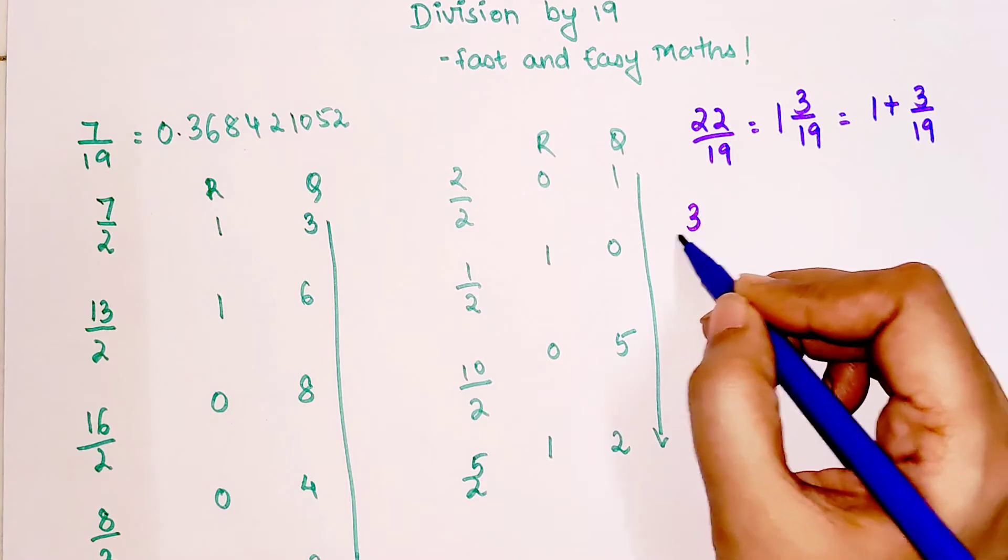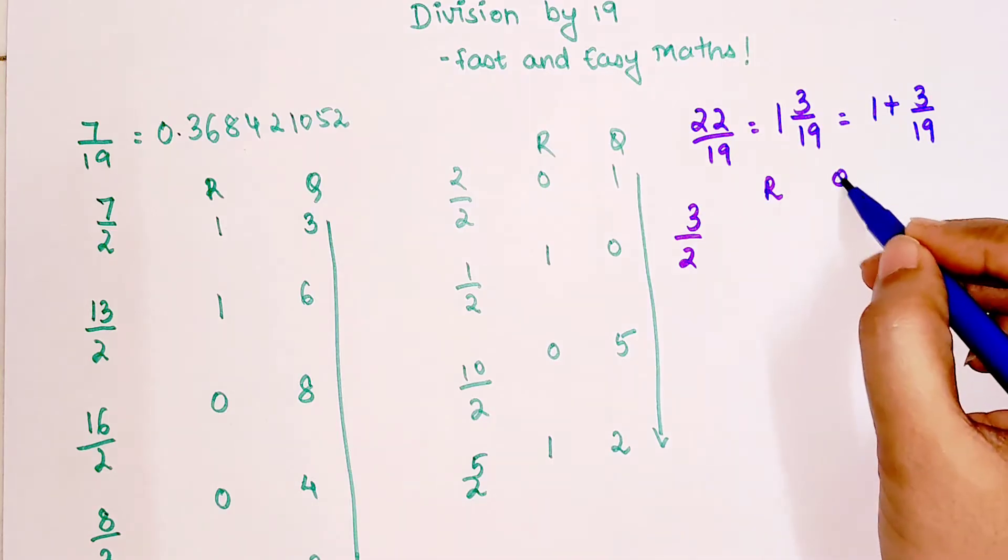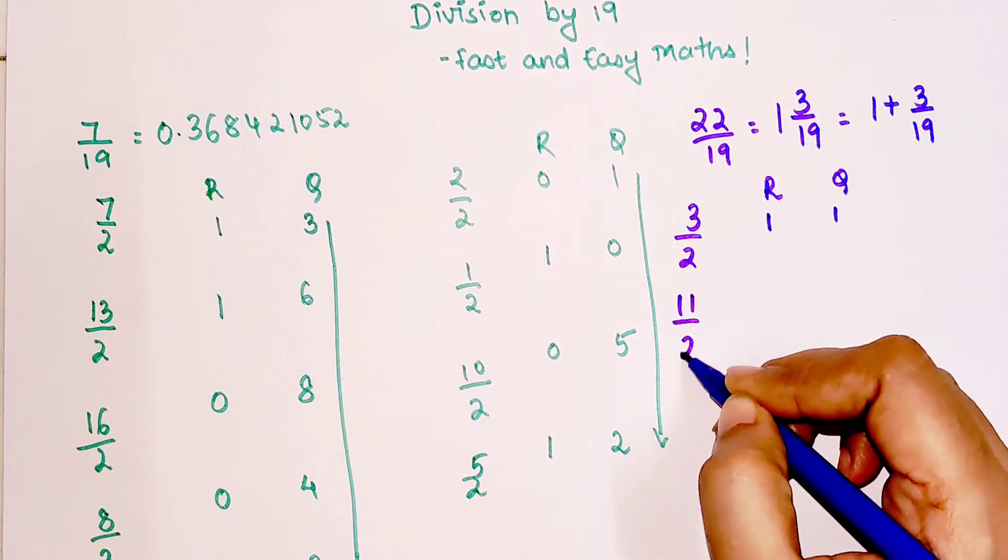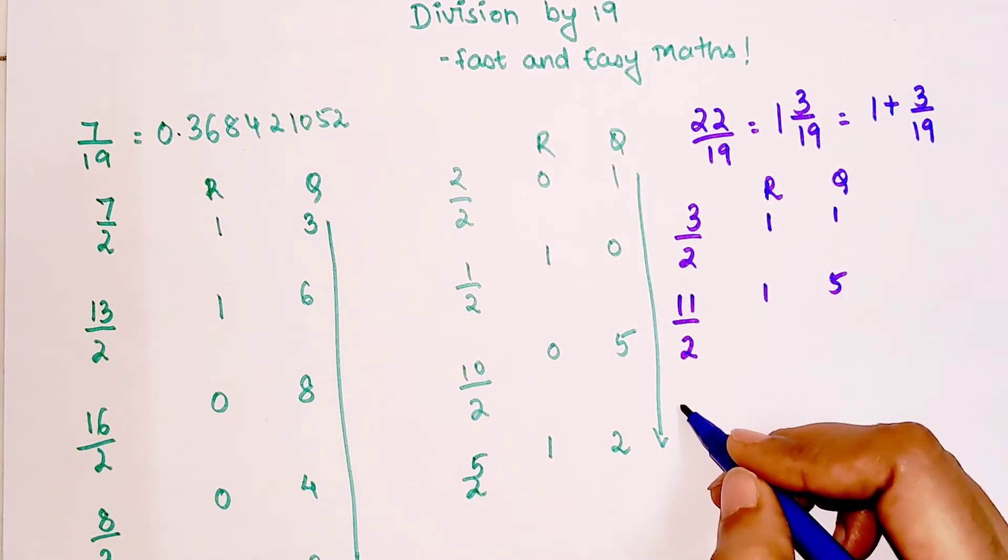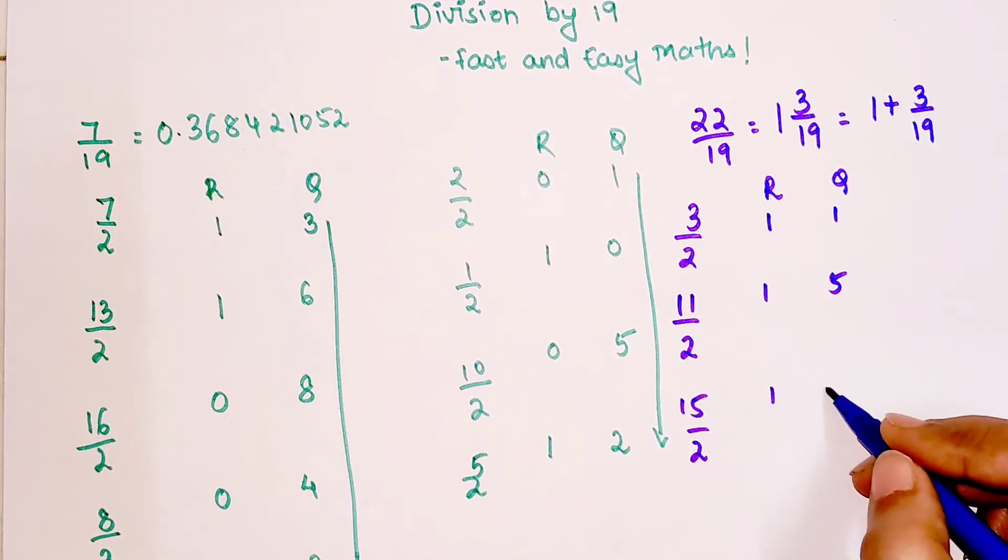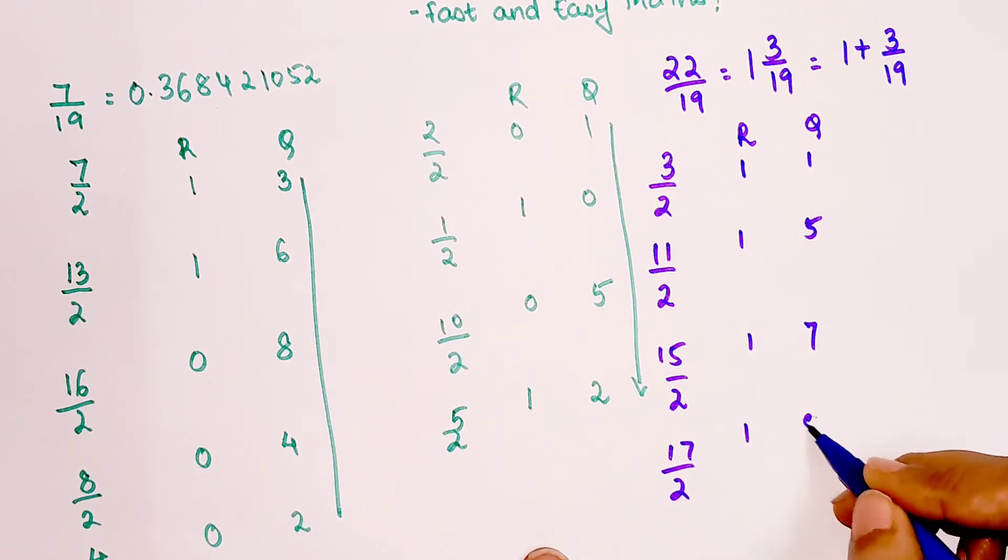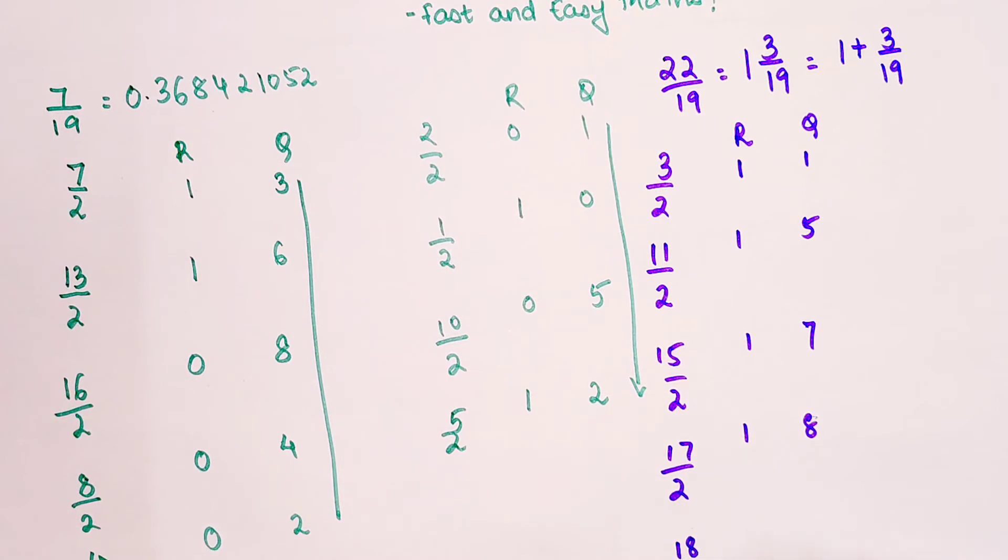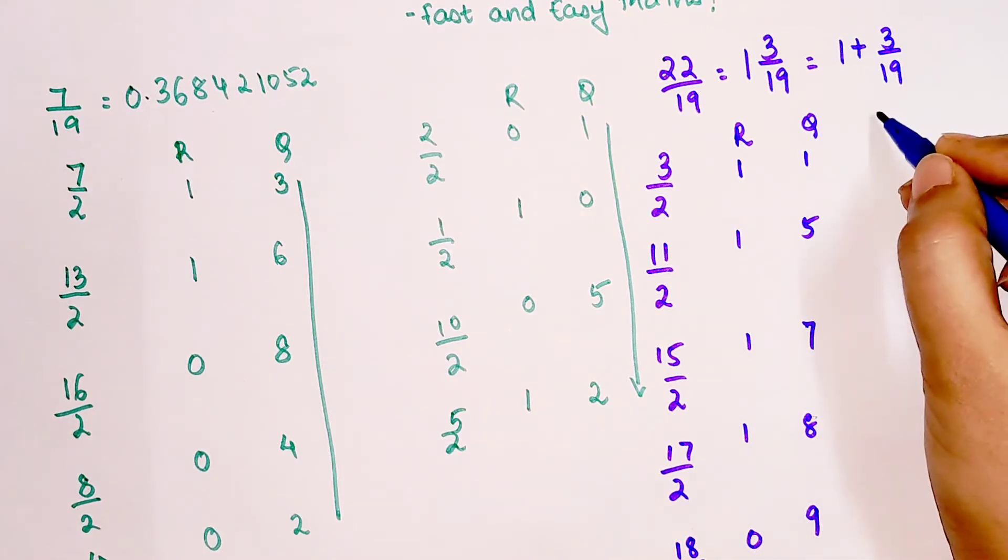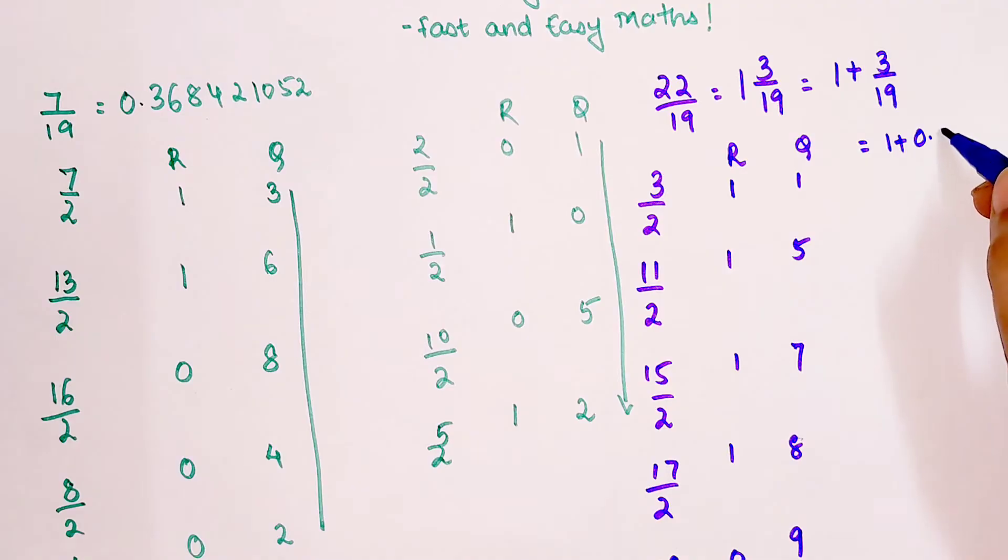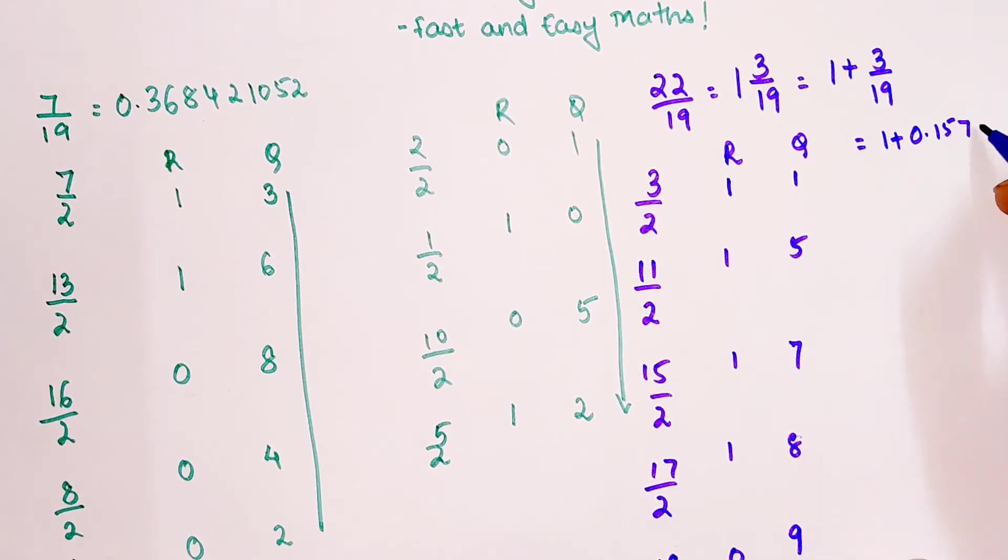Now we start with 3 divided by 2. The remainder is 1 and quotient is 1. Then 11 divided by 2 gets you 1 and 5. Then 15 divided by 2 gets you 1 and 7. Then 17 divided by 2 gets you 1 and 8. Then 18 divided by 2 gets you 1 and 9.